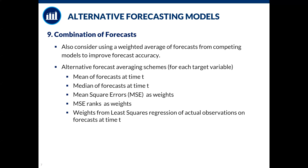In addition to all the different variations of MIDAS and DFM, we also consider combination of forecasts as a way of improving forecast accuracy. Five weighting schemes are considered: the mean of forecasts, median, mean square error weights, MSE-based ranks, and least squares regression of actual observations on forecasts — which turns out to be the best among the five.